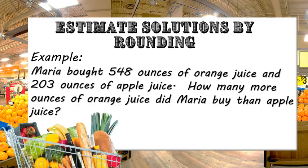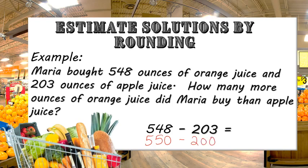Let's check out this word problem. Maria bought 548 ounces of orange juice and 203 ounces of apple juice. How many more ounces of orange juice did Maria buy than apple juice? To solve this, I would have to subtract 548 minus 203 — I can't do that in my head, so let me estimate. 548 rounds to 550, and 203 rounds to 200. So if I subtract 550 minus 200, I get 350. So I know the answer is somewhere around 350.